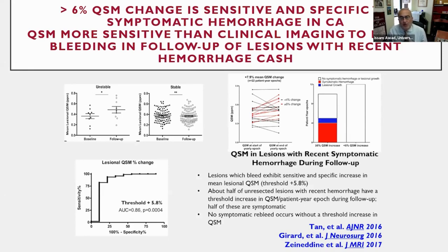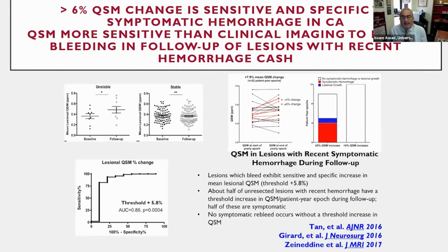A greater than six percent QSM change achieves 100% specificity. If we look at lesions that had bled in the prior year, the changes occur much more greatly. Many of them will recover and their QSM will decrease during the subsequent year, and many lesions will have additional growth or bleeding, shown in red on the right graph. Importantly, all cases where we detected a clinical event during that epoch were captured by a predicted QSM increase. But there are cases with QSM increase that do not have a clinical event, hence QSM is much more sensitive.